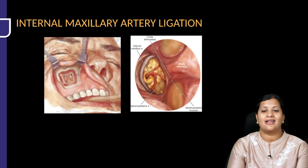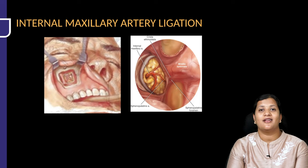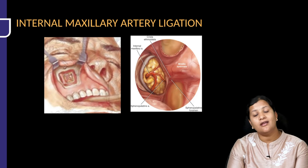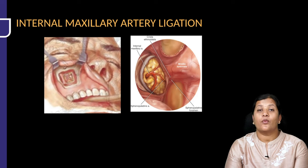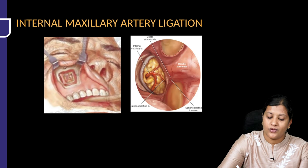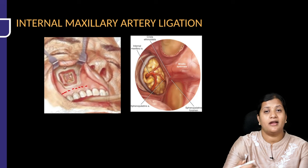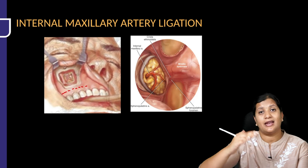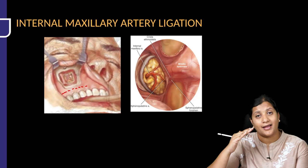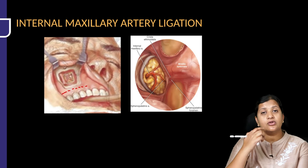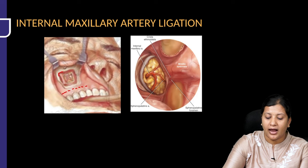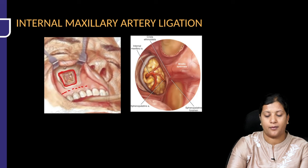The next artery to ligate is the internal maxillary artery. It can be approached via the Caldwell-Luc approach or endoscopically. In the Caldwell-Luc approach, a sub-labial incision is taken and the mucosa is elevated. Once the mucosa of the maxillary bone is elevated, the periosteum is also elevated and an opening is made in the anterior wall of the maxilla.